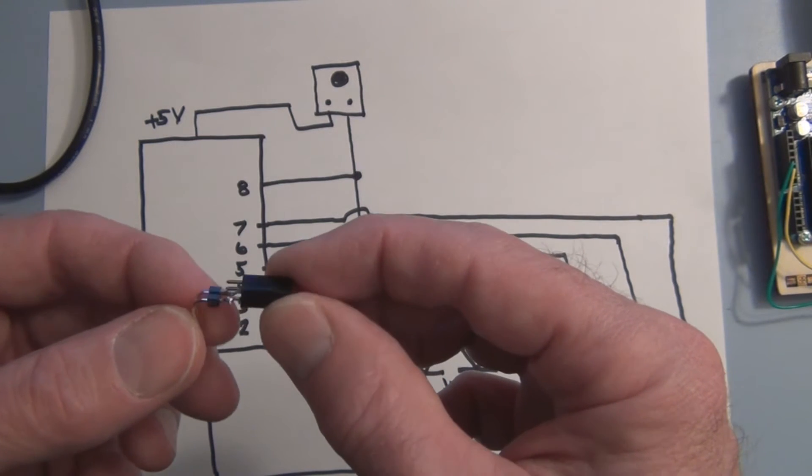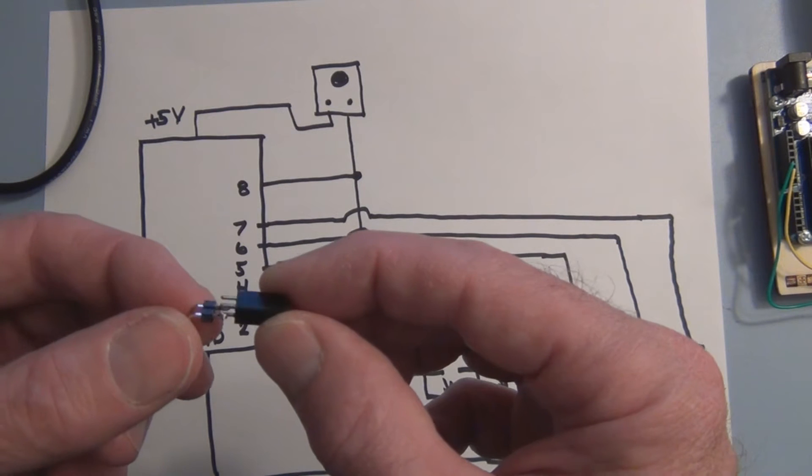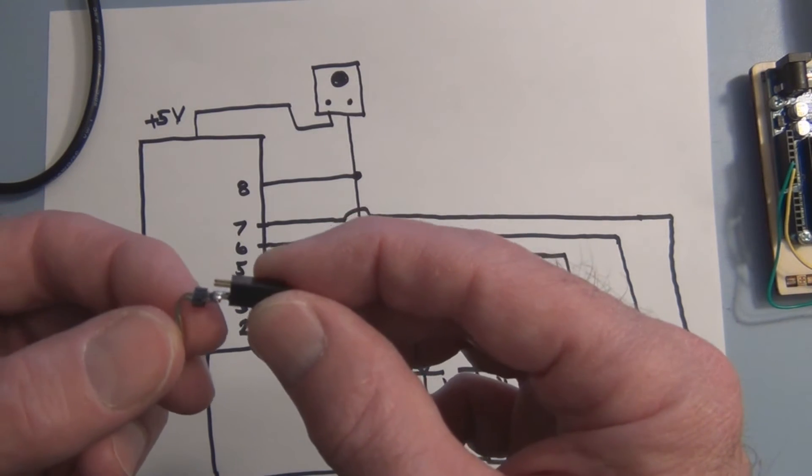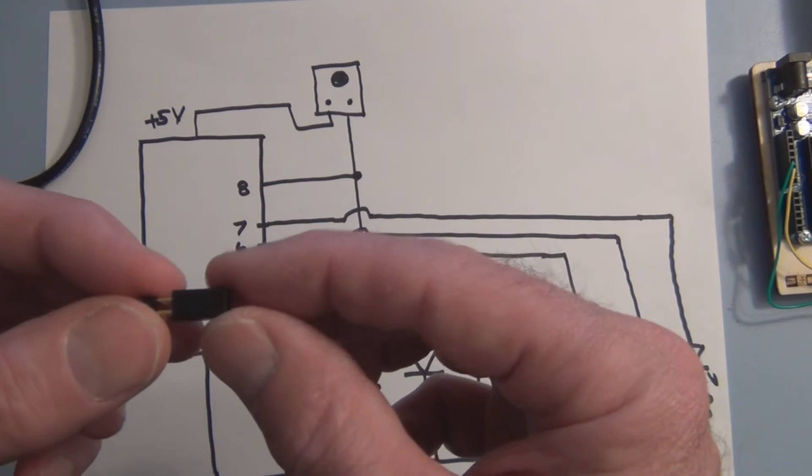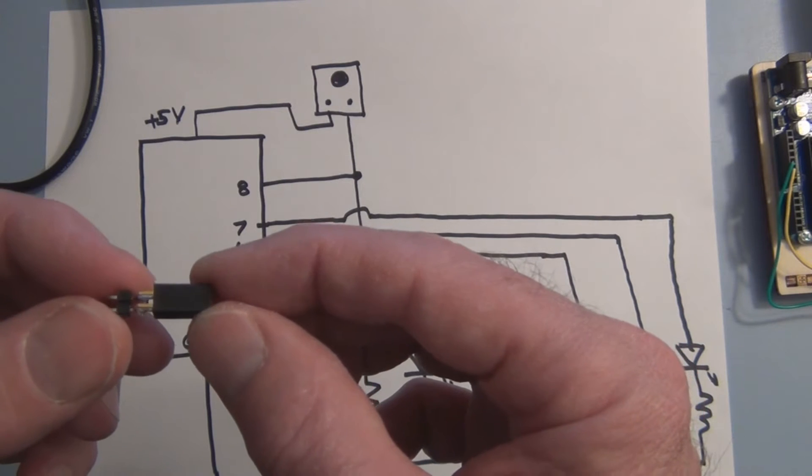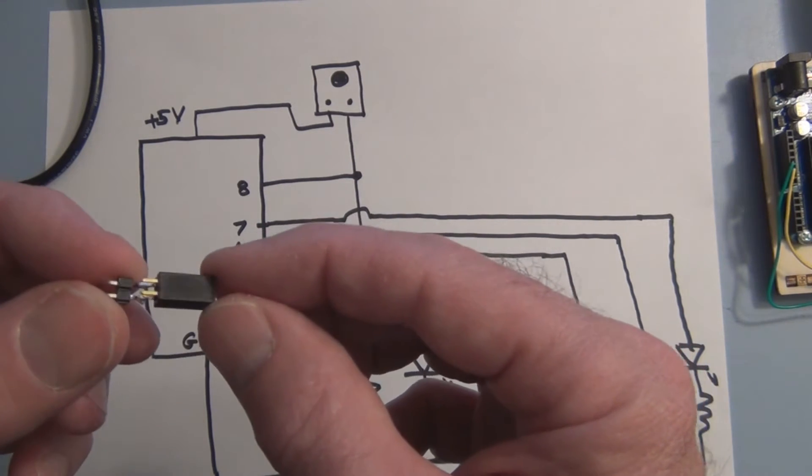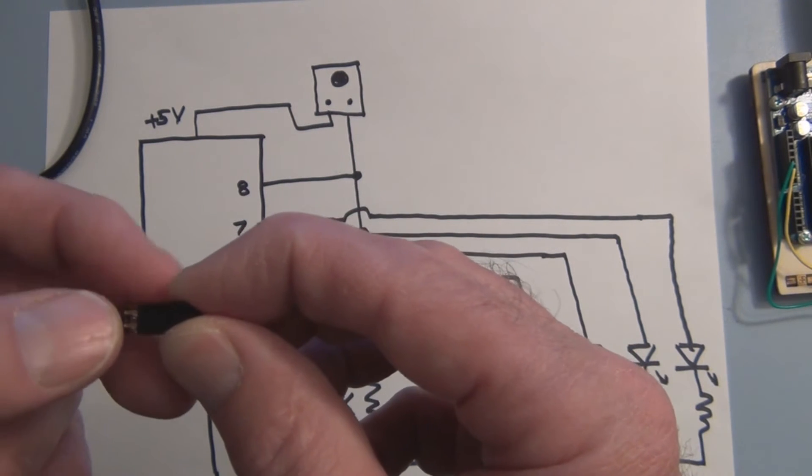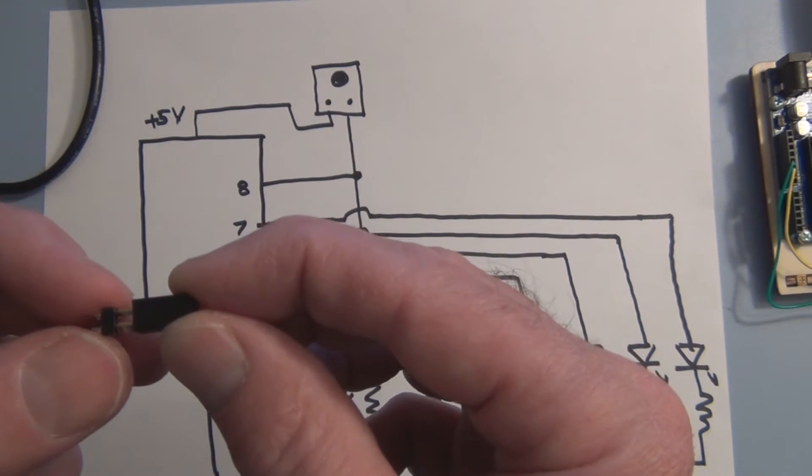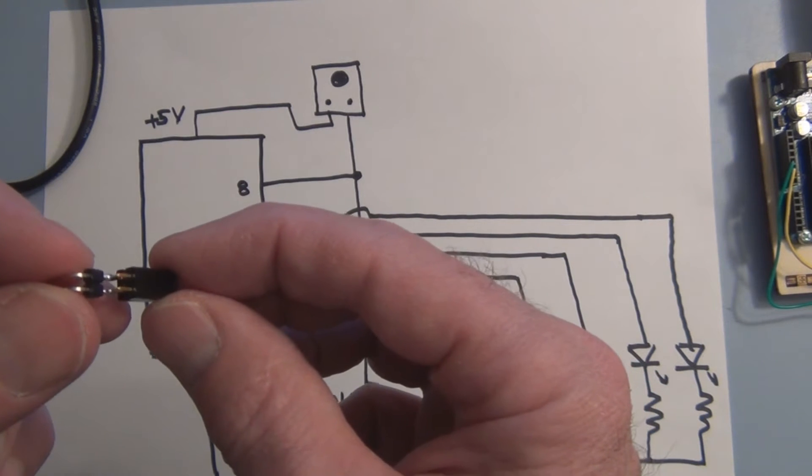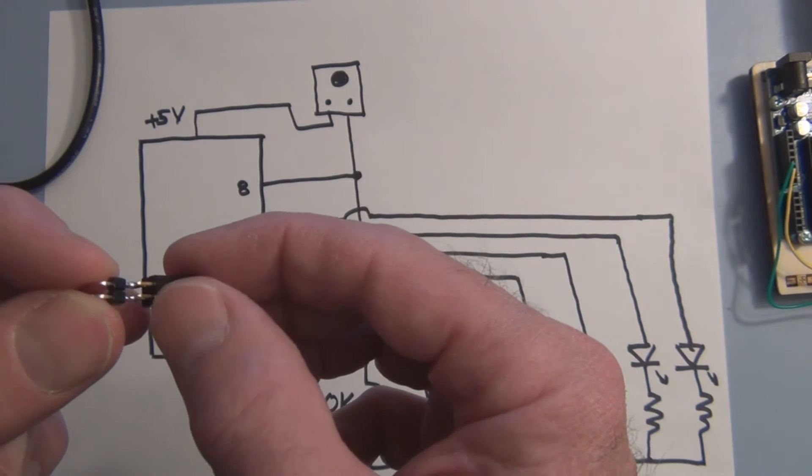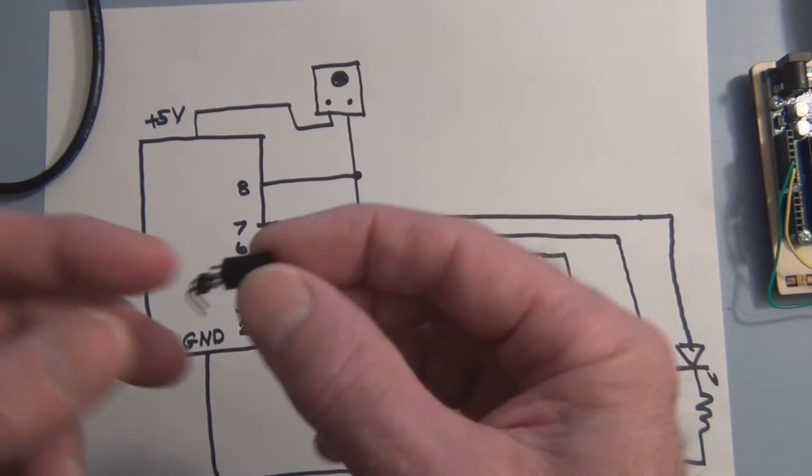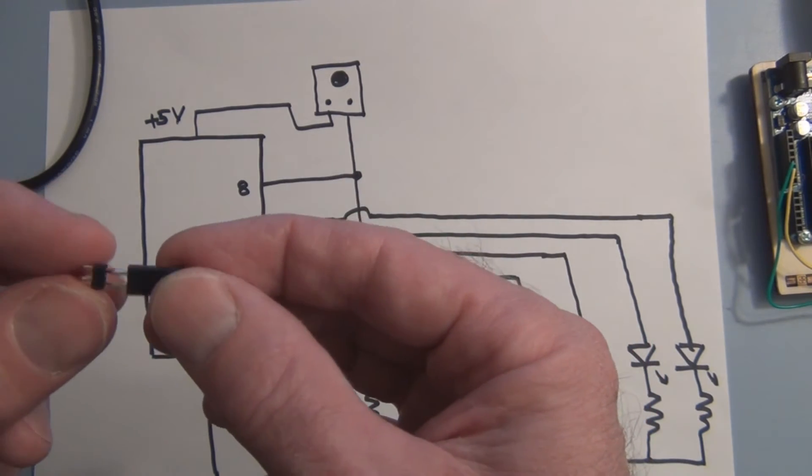This is the tilt switch. The pins weren't long enough, so I had to solder these male header pins onto the pins to extend them, and then I bent them at 90 degrees. Basically there's a ball bearing in there that when you tilt this toward where the pins are, it closes or makes the contact between these two pins, shorting them out. If you tilt it the other way, it rolls away from the pins and it's an open circuit again. That's the tilt switch that came with the kit.